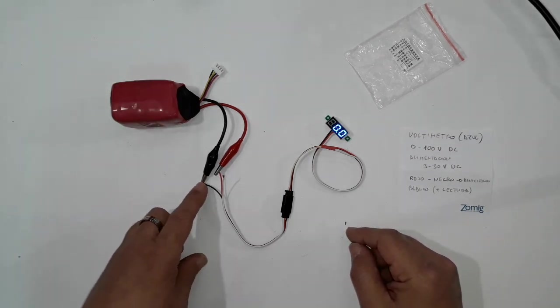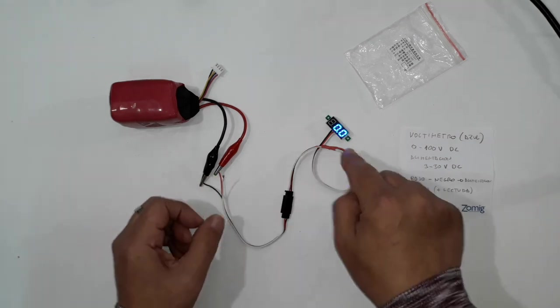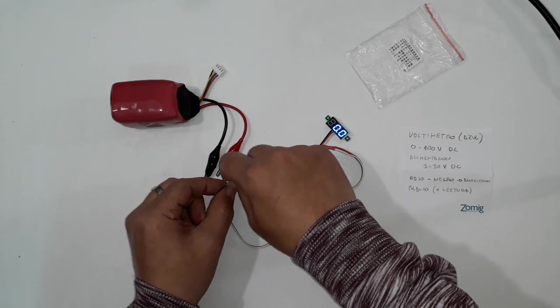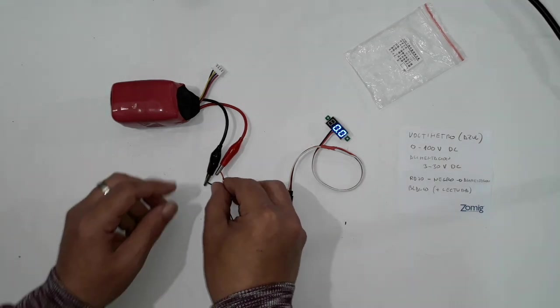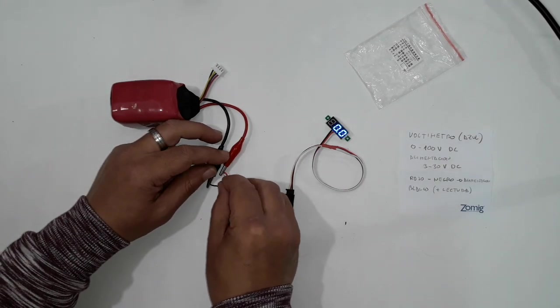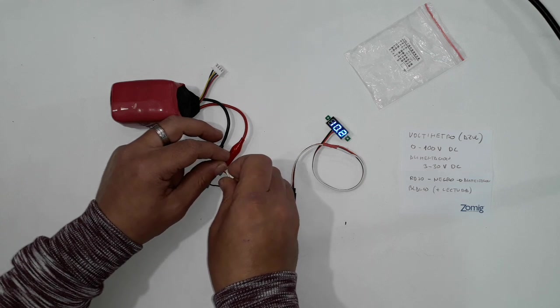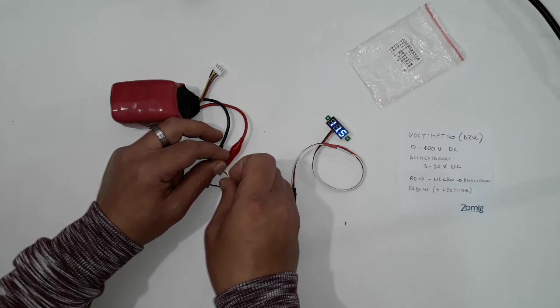We are feeding it black with black, red with red, and you can see it's marking 00 because there is no voltage in the white cable. If we put it here on the white cable, it gives us the voltage of the battery, which in this case is 11.5.